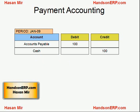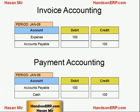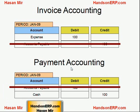Try to understand why this accounting is generated when you make a payment. Here I've presented both accounting entries — the entry generated at invoice creation and the entry generated at payment creation. The key point is that once you make a payment, accounts payable is nullified. Whatever accounts payable was generated at invoice creation is basically nullified, and you no longer have any liability. The net result is cash is reduced and your expense is increased, as if you purchased something without borrowing money.